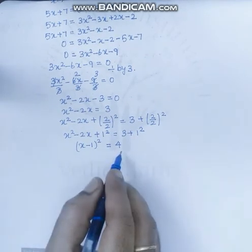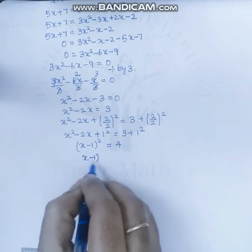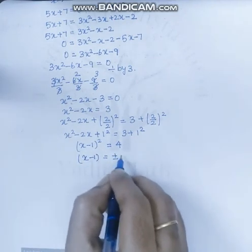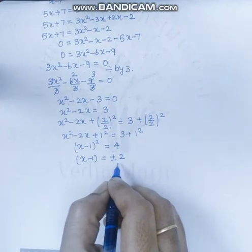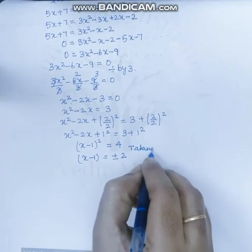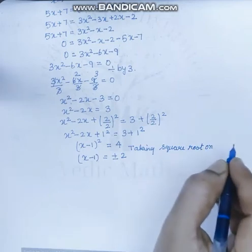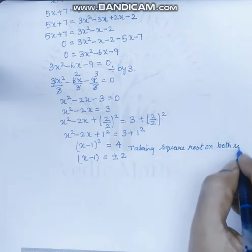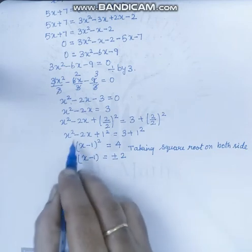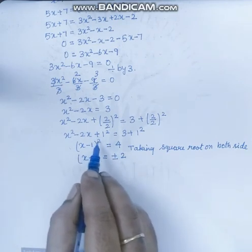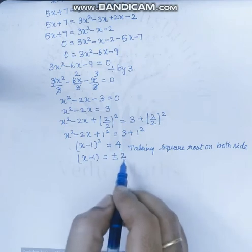Now we take the square root on both sides. Taking square root: the square root of x minus 1 whole square gives x minus 1, and the square root of 4 gives 2. So, x minus 1 is equal to plus or minus 2.